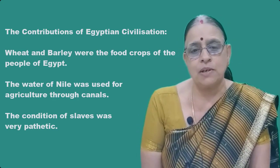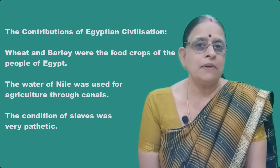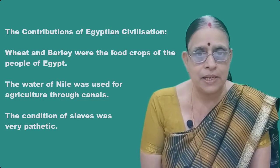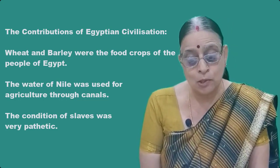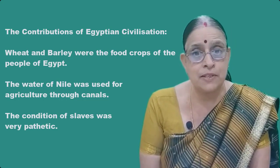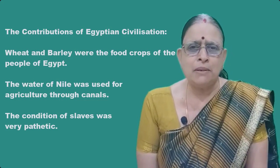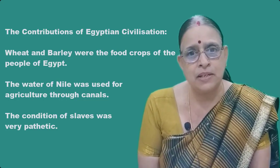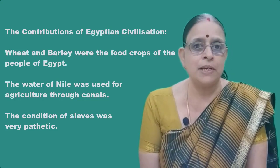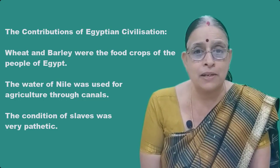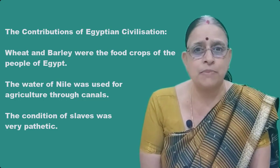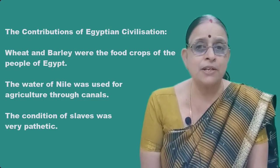Egypt became a province, meaning a state, of Rome. Now let us learn about some of the contributions or aspects of the Egyptian civilization. Wheat and barley were the main food crops of these people. Water from the Nile was used for agriculture and they knew the construction of canals — they constructed canals thousands of years ago. Another bad aspect of this civilization was slavery, which was a black mark of the ancient Egyptian civilization. Slavery means the poor people or laborers were purchased by the rich, who took a lot of work from the slaves, ill-treated them, and gave them punishment. The condition of the slaves was pathetic — very sorrowful, sad, and miserable.